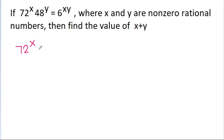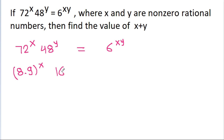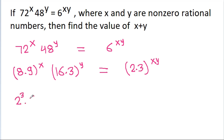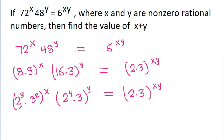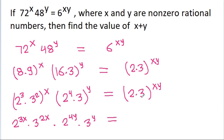We have 72 power x into 48 power y equal to 6 power xy. 72 is 8 into 9, so we write 8 into 9 power x, and 48 is 16 into 3, so we write 16 into 3 power y, equal to 6 which is 2 into 3 power xy. Then 8 is 2 cubed and 9 is 3 squared, giving 2 power 3x into 3 power 2x, and 16 is 2 power 4, giving 2 power 4 into 3 power y, equal to 2 into 3 power xy, which is 2 power xy into 3 power xy.